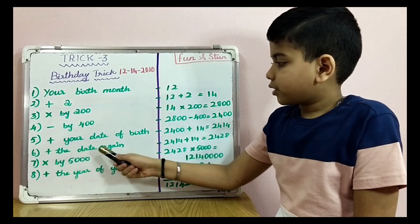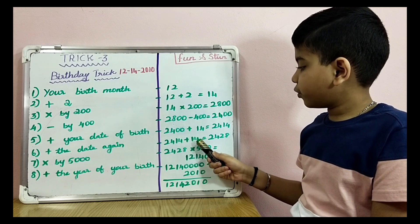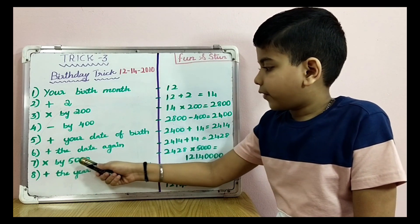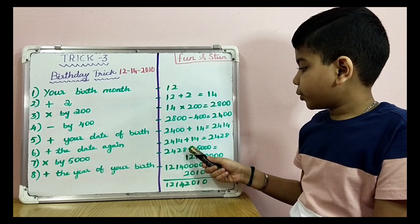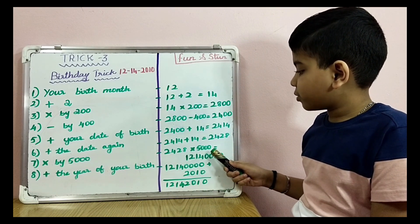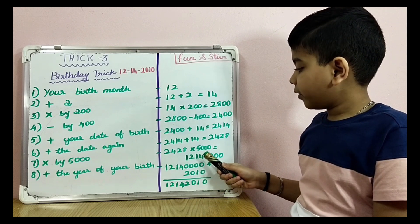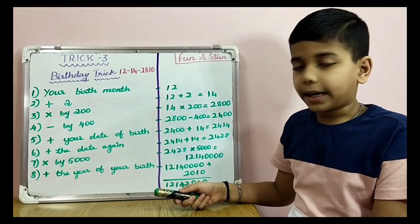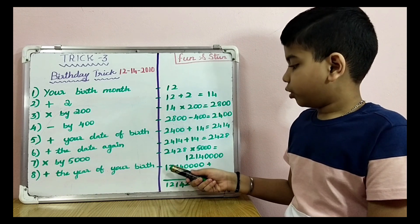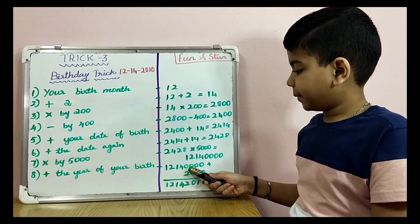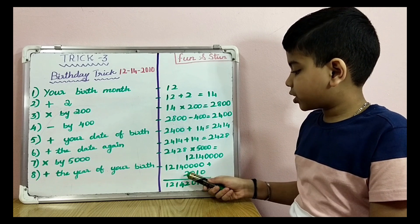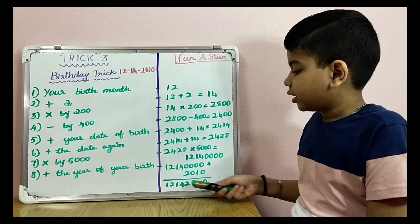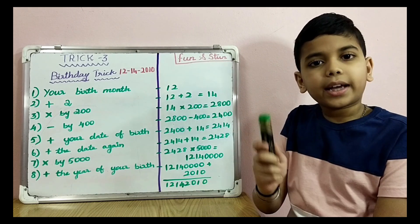Add the date again: 2414 plus 14 equals 2428. Multiply by 5000: 2428 multiplied by 5000 equals 12,140,000. Add the year of your birth: mine is 2010, so 12,140,000 plus 2010 equals 12,142,010. This is my date of birth: 12/14/2010. Try it with yours.